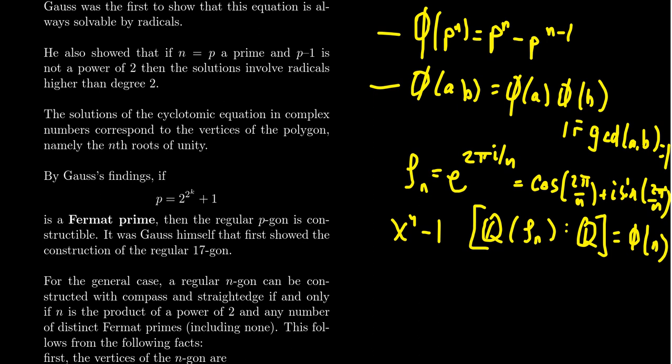The real part is the x-coordinate, and the imaginary part is the y-coordinate. If we can construct cosine of 2 pi over n, we can construct sine of 2 pi over n. So it comes down to, can we construct cosine of 2 pi over n?